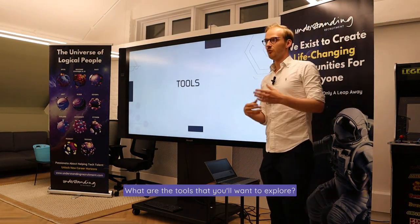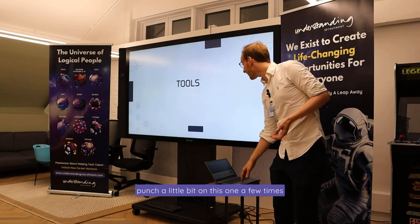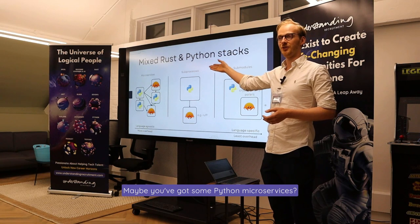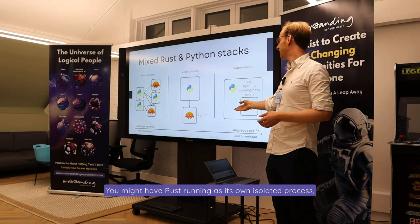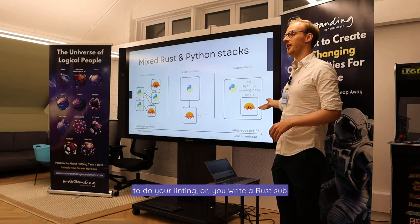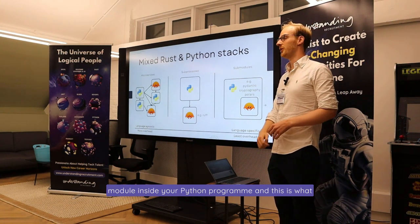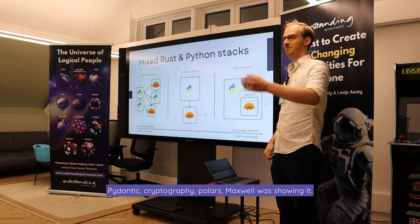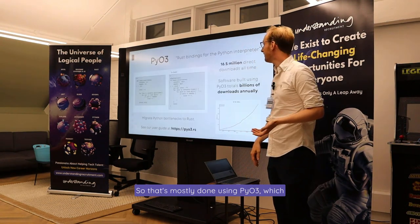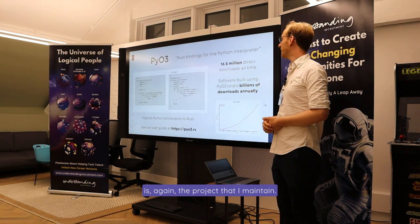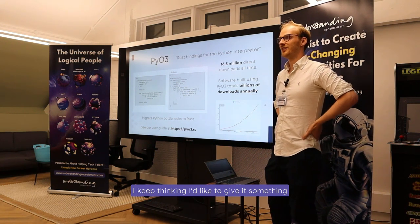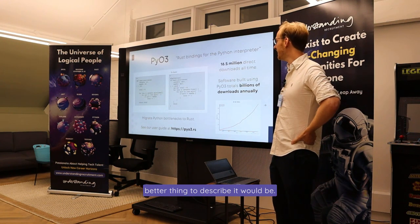What are the tools you'll want to explore? You might have Python microservices, some Rust Python microservices. You might have Rust running as its own isolated process, or your build scripts might call Rust to do your linting. Or you write a Rust submodule inside your Python program — this is what Pydantic, Cryptography, and Polars do. That's mostly done using PyO3, which is the project that I maintain. The quote on GitHub is 'Rust bindings for the Python interpreter.'